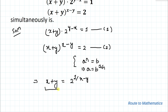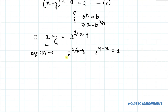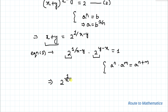Now substituting this value of x plus y into equation 1, we get 2 to the power (1 by x minus y) multiplied with 2 to the power (y minus x) equals 1. Here you can see the bases are the same. Using the rule a to the power n times a to the power m equals a to the power (n plus m), we write 2 to the power (1 by x minus y) plus (y minus x) equals 1.